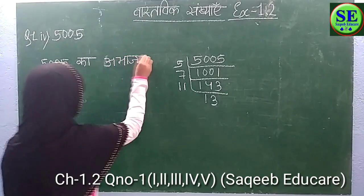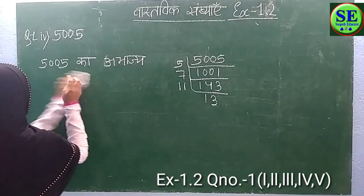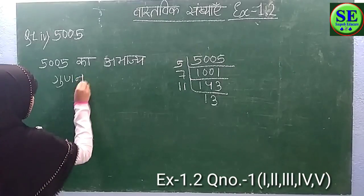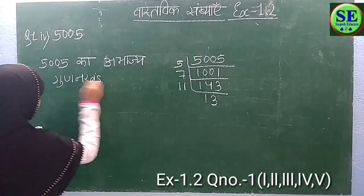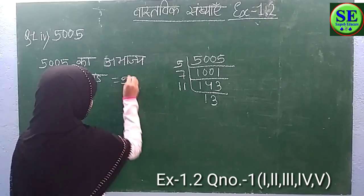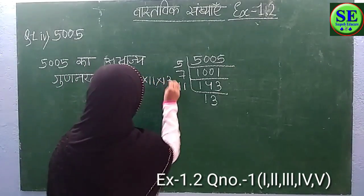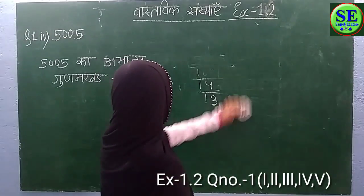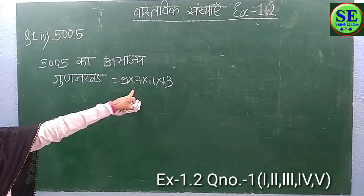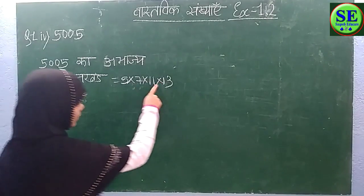Abhaj Gunan Khan is equal to 5 into 7 into 11 into 13. 5 is equal to 7 into 11 into 13.